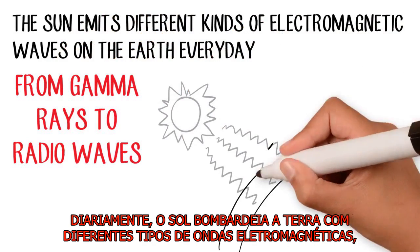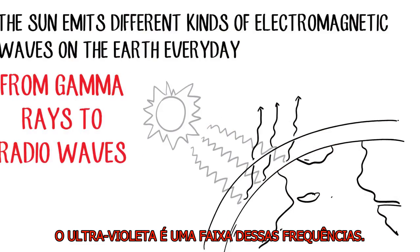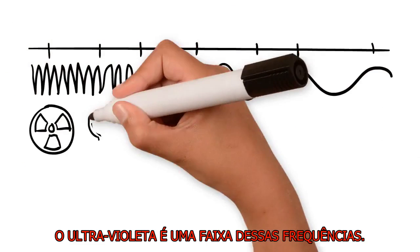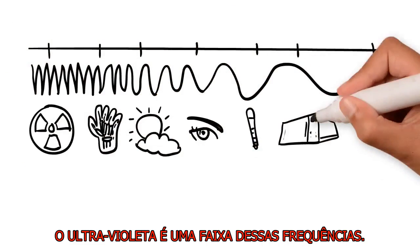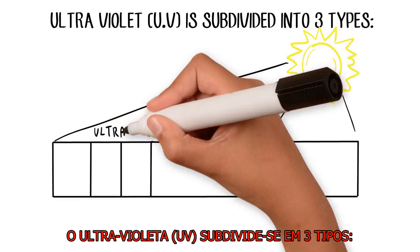From gamma rays to radio waves, the ultraviolet is a range of those frequencies. Ultraviolet, or UV, is subdivided into three types.